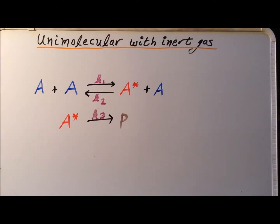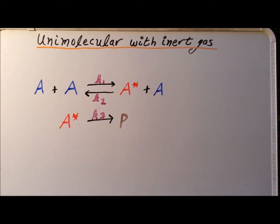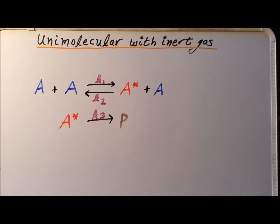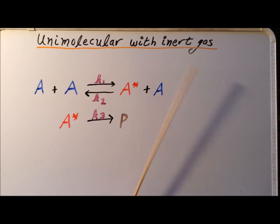In the second step of the mechanism, the activated complex, red A star, is converted into product with a rate constant of K3. We assume that this reaction proceeds only in one direction. So far, the scheme is entirely identical to the one that we worked at earlier in this video here, which I refer you to.